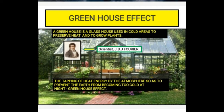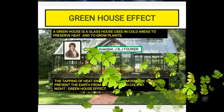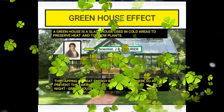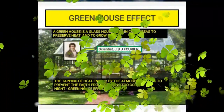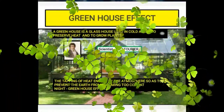JBG Fourier assumed that the earth is a giant greenhouse. The earth's atmosphere traps the heat energy from the sun and prevents the earth from becoming too cold at night — this is known as the greenhouse effect. The gases which absorb heat energy and maintain a livable temperature on the earth are called greenhouse gases: carbon dioxide, nitrous oxide, chlorofluorocarbons, methane, and water vapor.